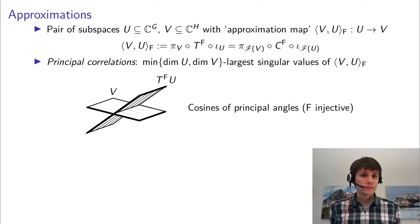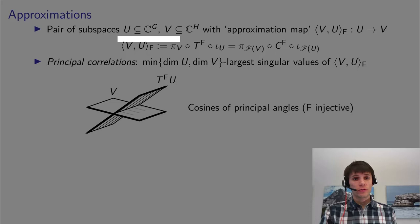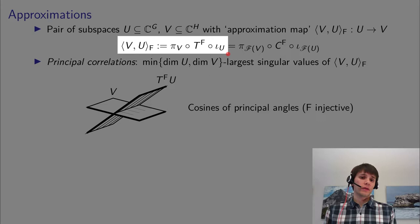One U corresponding to the input property and one V corresponding to the output property. And for this kind of pair, we can define an approximation map, which is a map from U to V, and it consists of a composition of three maps. The first is an inclusion map just from U to C superscript G. Then there is this transformation by the transition matrix for F. And finally, we do an orthogonal projection on V.